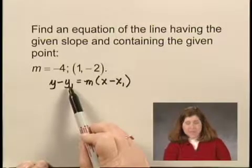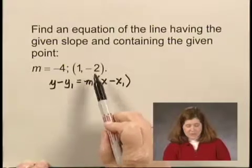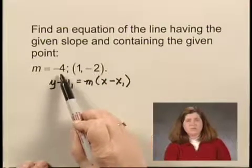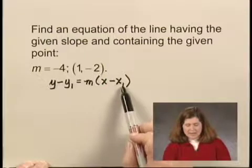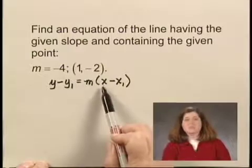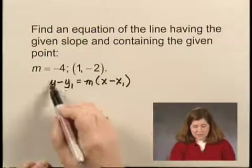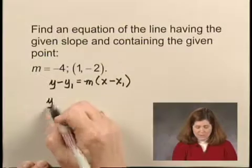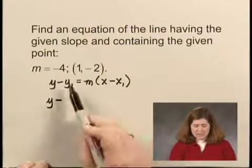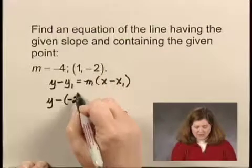y sub 1 is the y-coordinate of the point given, which is negative 2. m is the slope, and x sub 1 is the x-coordinate of the point given. The y and x remain in the equation as the variables. So I substitute, carrying the y down minus y sub 1 is negative 2, and I use parentheses to avoid having minus and minus together.